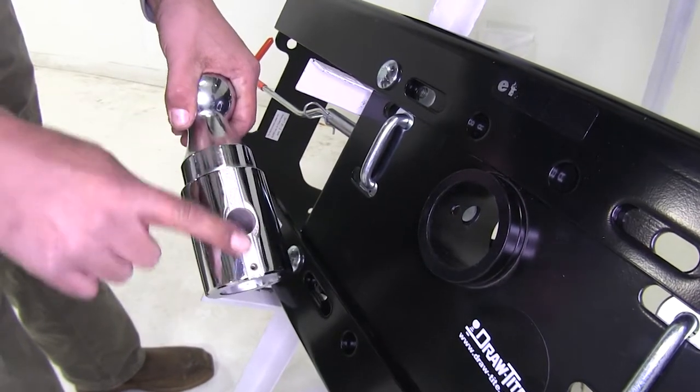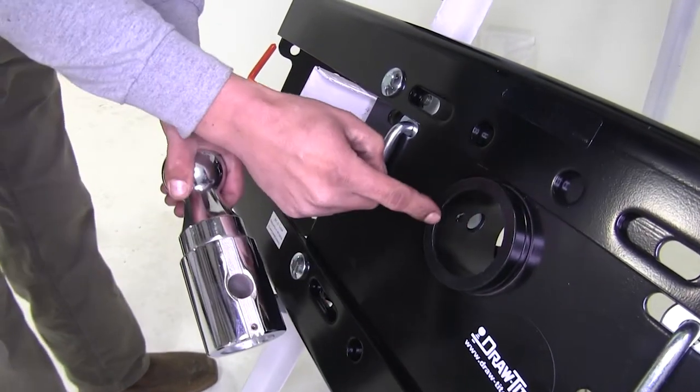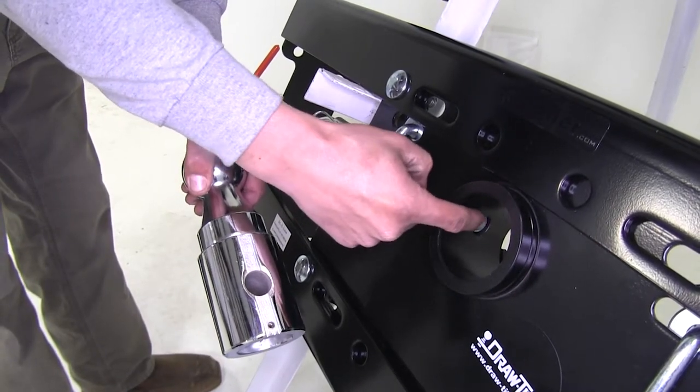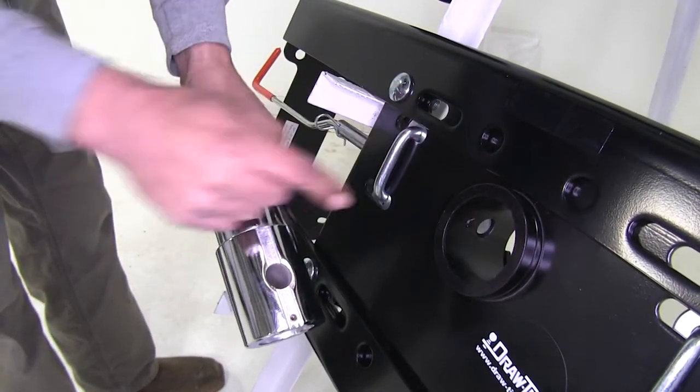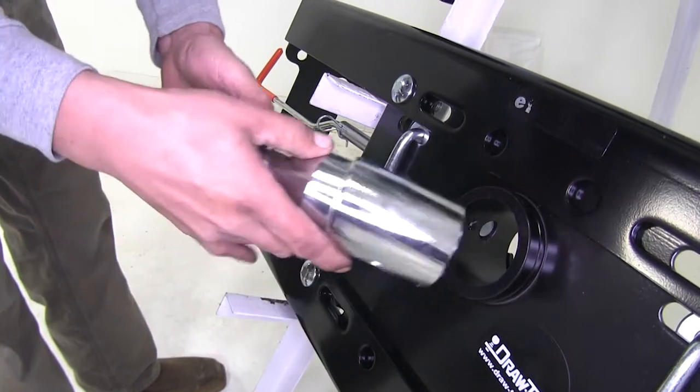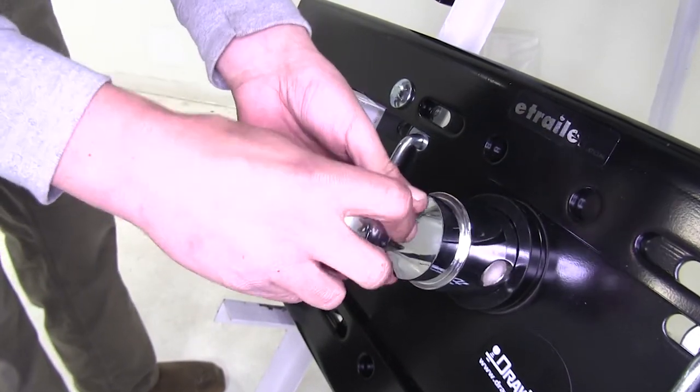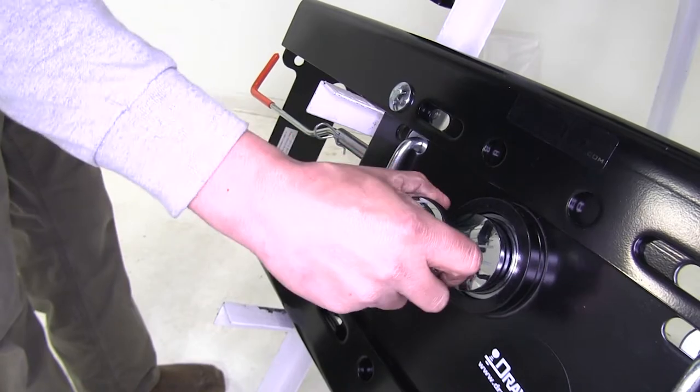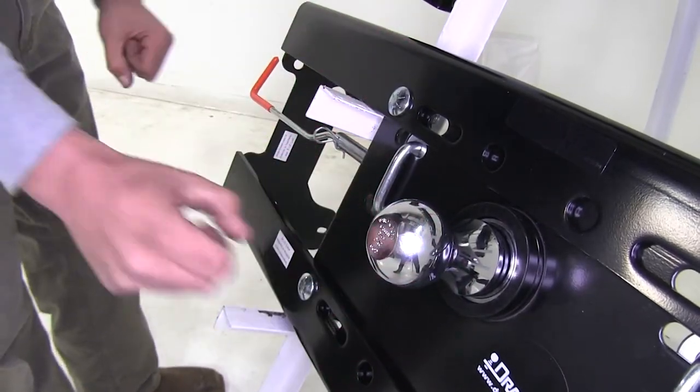Now to make sure it doesn't move while it's inside of here, there's a small notch right here inside of our tube as well as a notch in the ball so you can't put the ball in incorrectly and that way it keeps it nice and secure and it's not going to turn around and move on you.